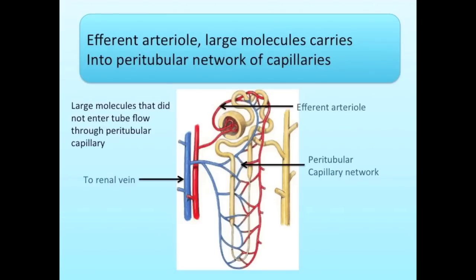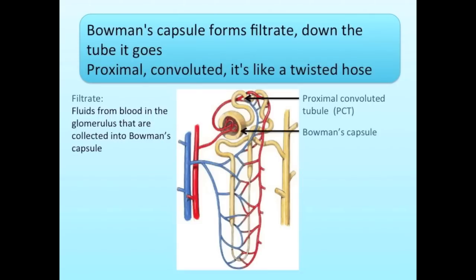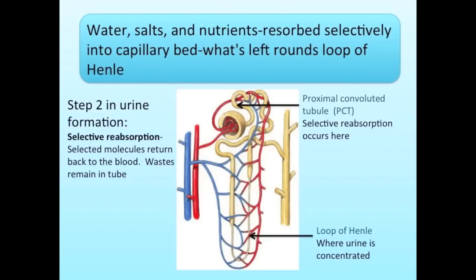Efferent arteriole — large molecules carry into the peritubular network of capillaries. Bowman's capsule forms filtrate, down the tube it goes. Proximal convoluted — it's like a twisted hose. Water, salts, and nutrients resorb selectively.